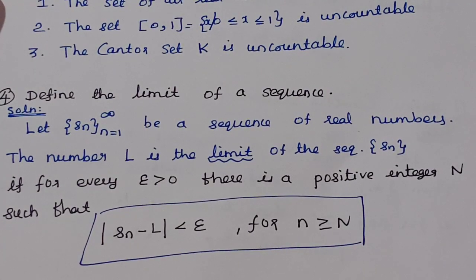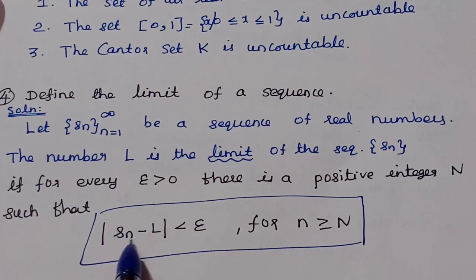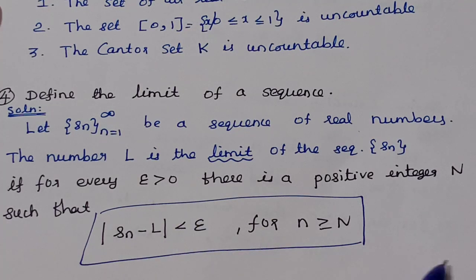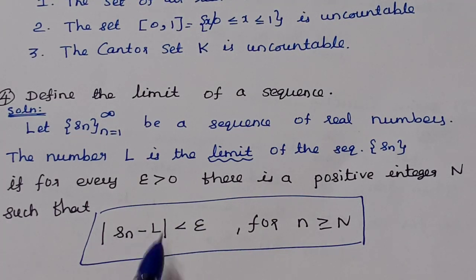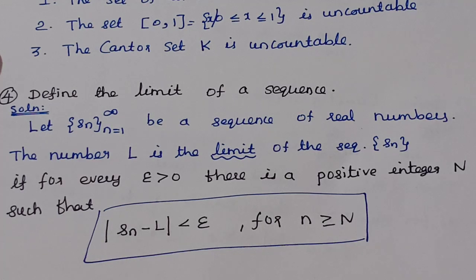That is, after a certain stage N, the distance of Sₙ from L is less than epsilon. When this finite value condition holds, that is the limit of the sequence.